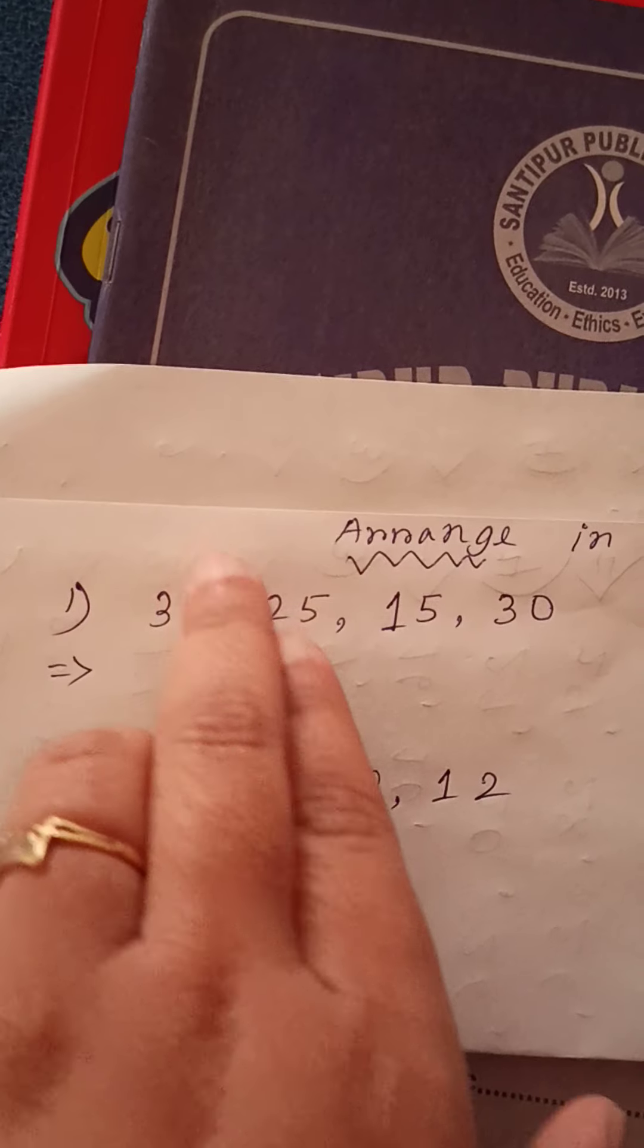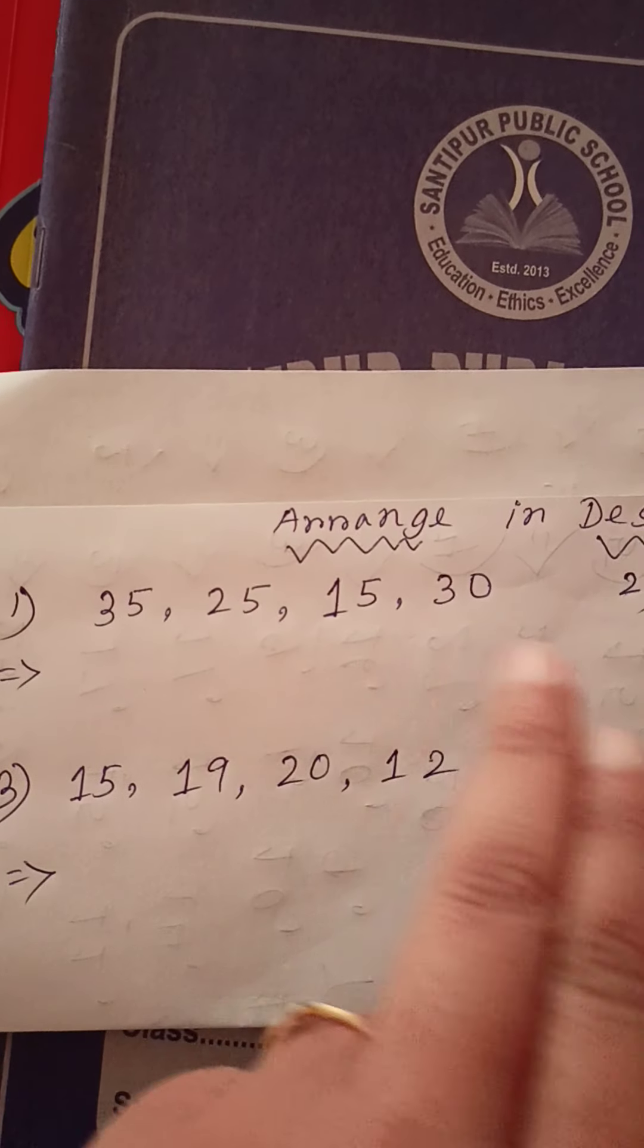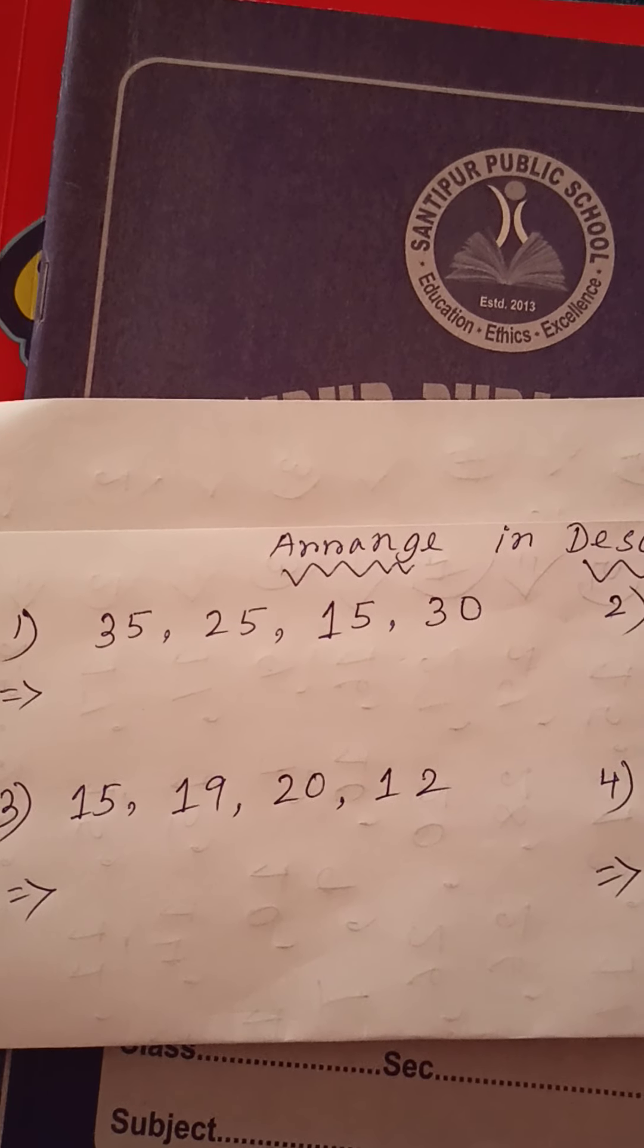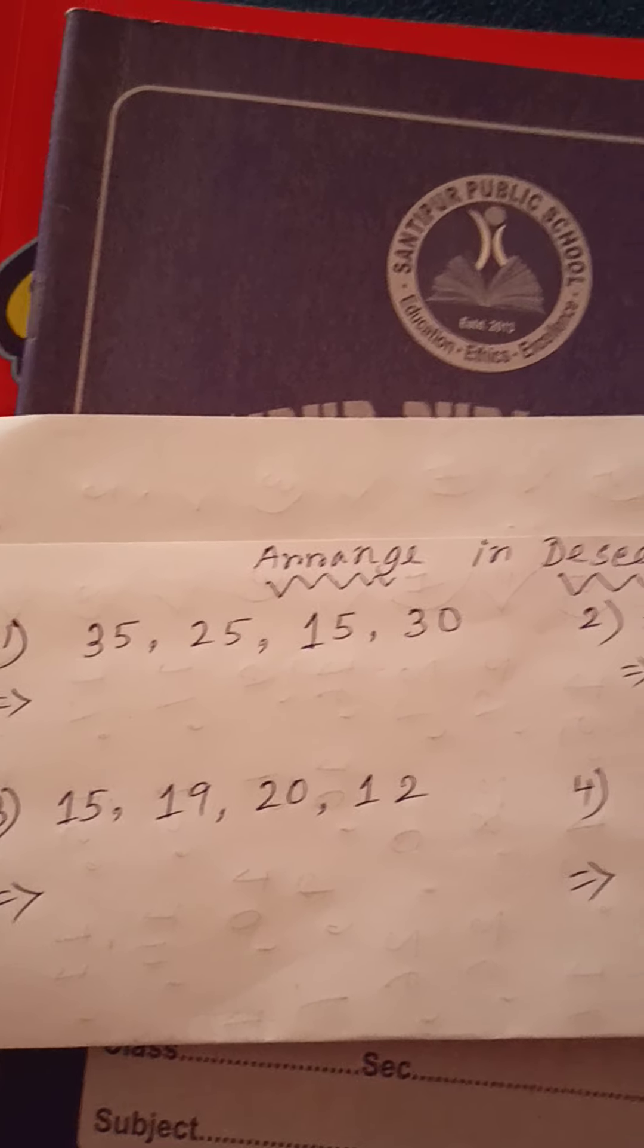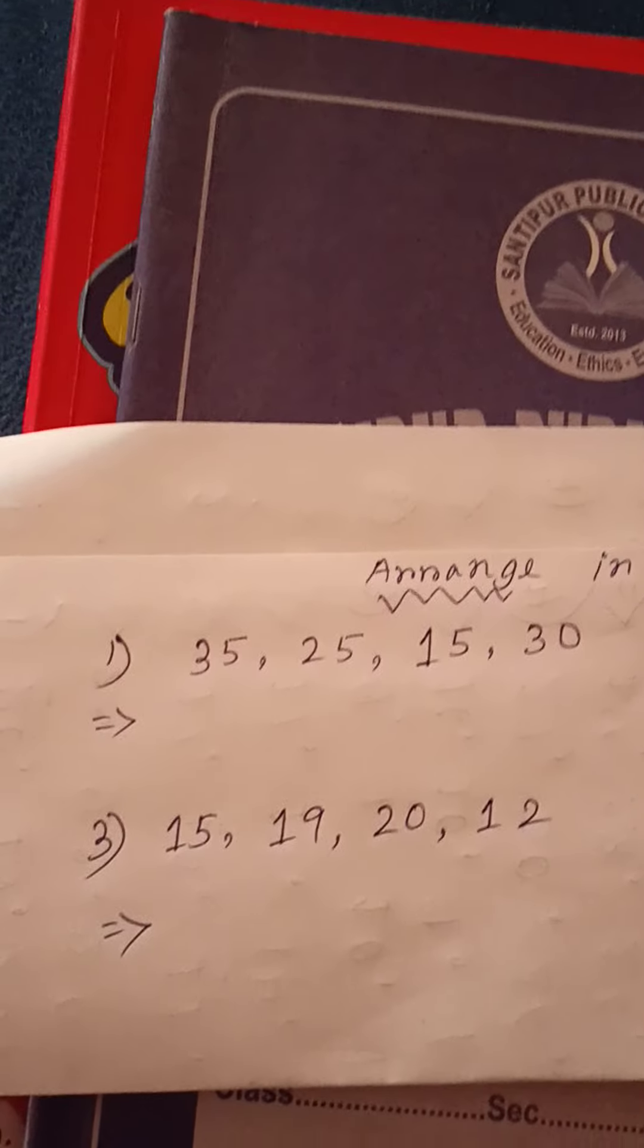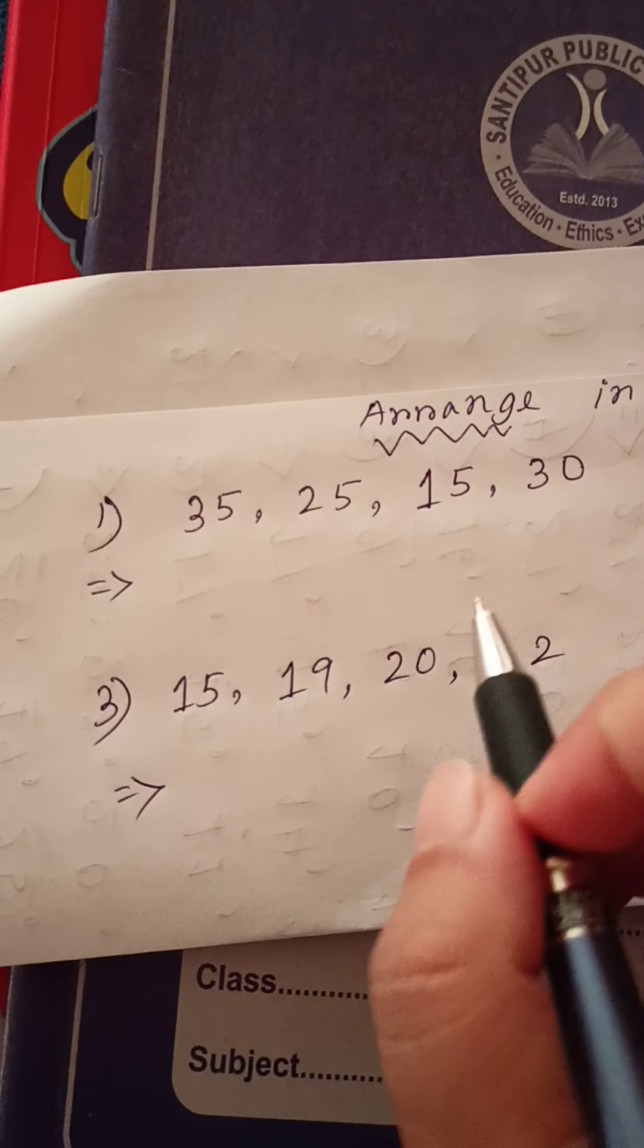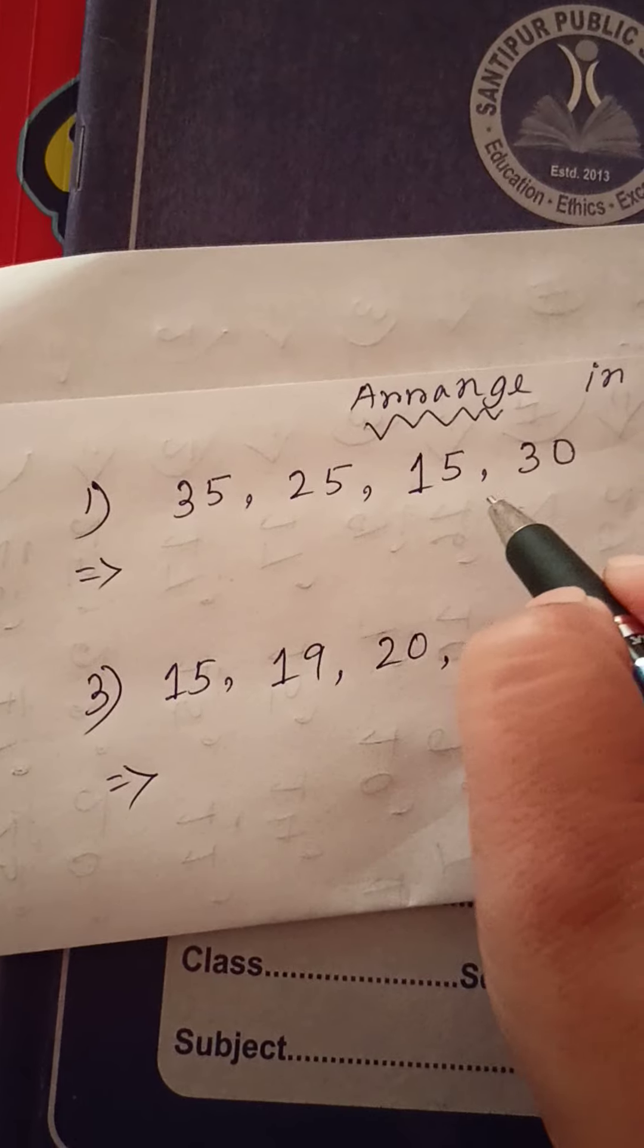Look at the example. Look here is four numbers. Descending order means we'll come first biggest number. Okay. So, here is four numbers. Look. So, we'll come first biggest number. 35, 25, 15, 30.